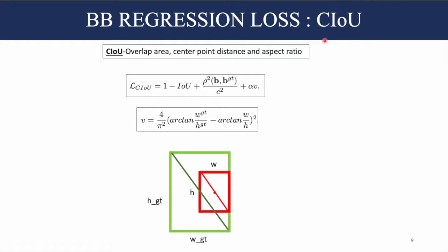An improvement over DIOU is CIOU (Complete IOU), which states that good bounding box regression requires focusing on overlap area, center point distance, and aspect ratio. The CIOU loss incorporates: IOU for overlap area, the distance term from DIOU for center point distance, and an aspect ratio term. The aspect ratio term V is defined as (4/π²) times the squared difference between arctan(width/height) of the ground truth box and arctan(width/height) of the predicted box, encoding the aspect ratio of both bounding boxes.